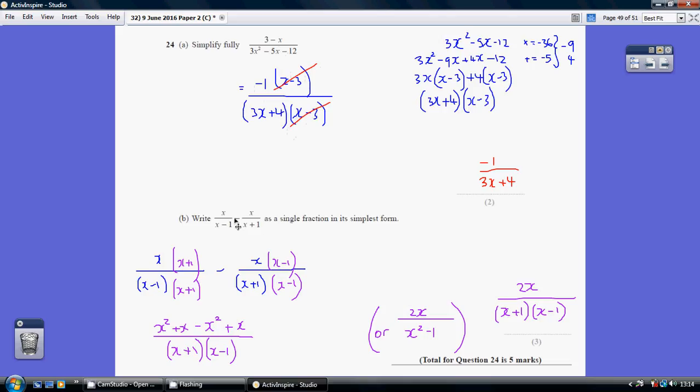Now to write this as a single fraction, we've got to subtract these two fractions. When we're subtracting fractions, we need a common denominator. My common denominator is going to be (x-1)(x+1).